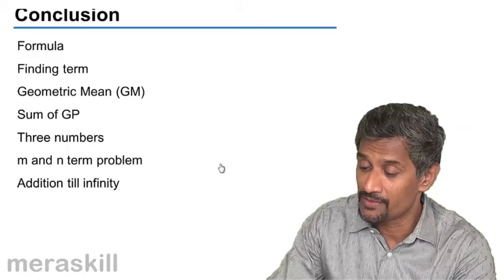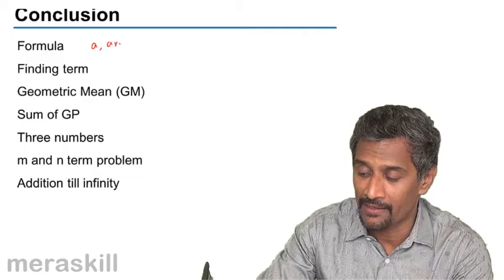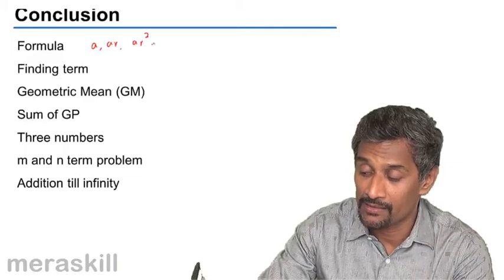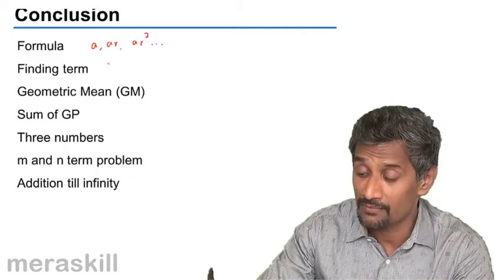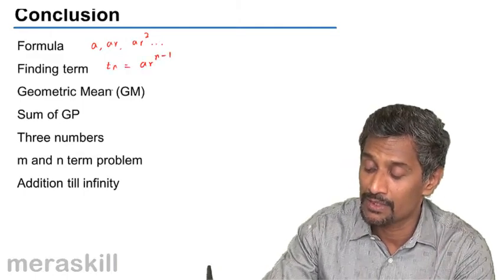We did the formula for a geometric progression: a, ar, ar², and so on. Finding the nth term, tn is nothing but ar raised to n minus 1.